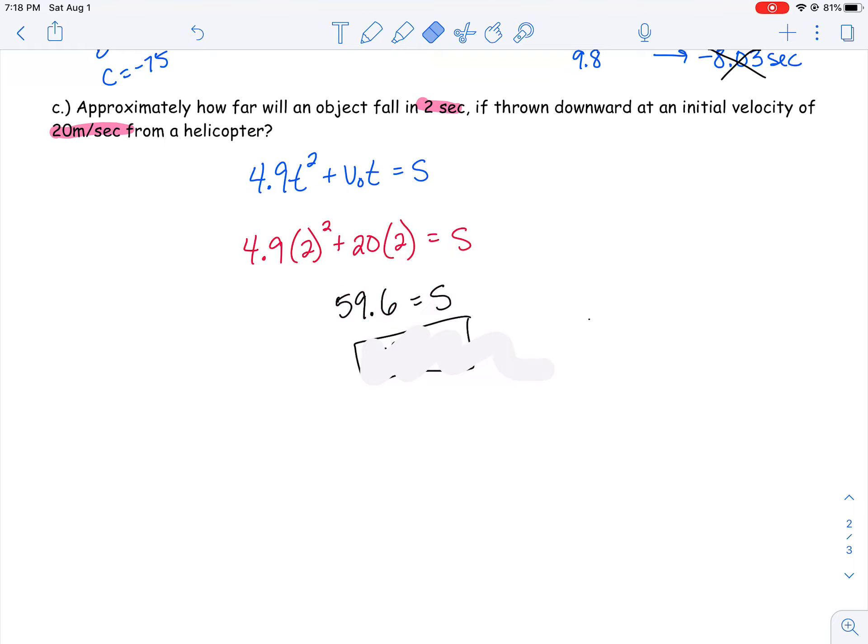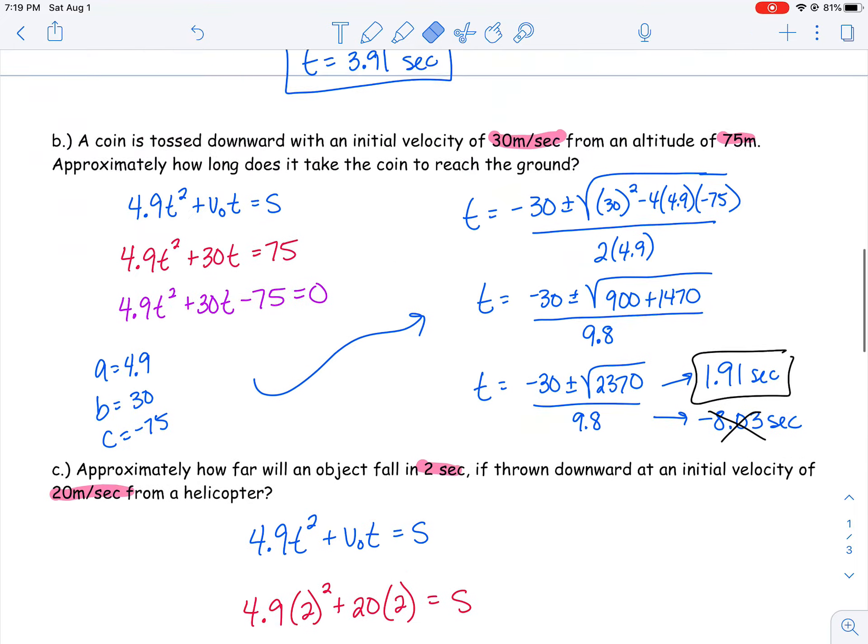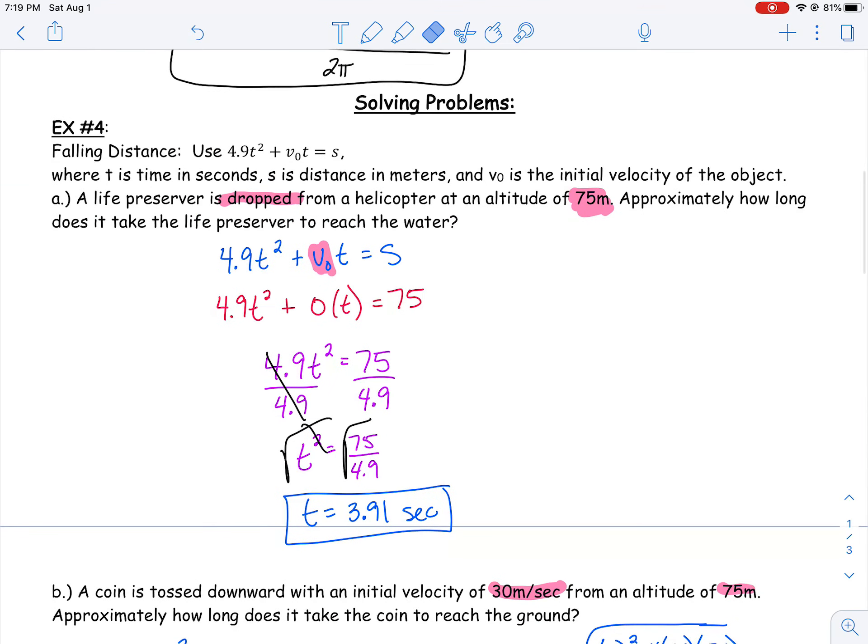I ended up getting 59.6. Remember that s was distance in meters. So how far will this object fall after two seconds? We can say approximately 59.6 meters. Make sure that we use that formula they gave us at the beginning, that we understand what all of those different variables mean, and that we can solve all different types of quadratic equations.